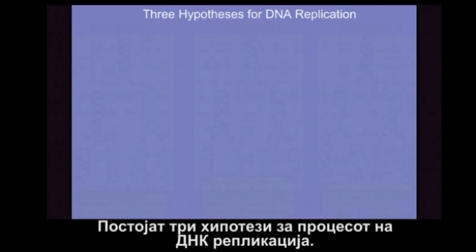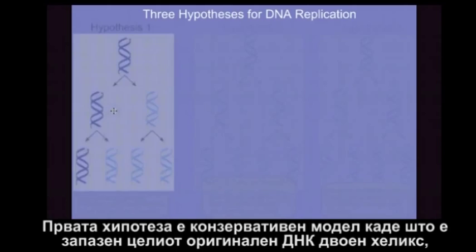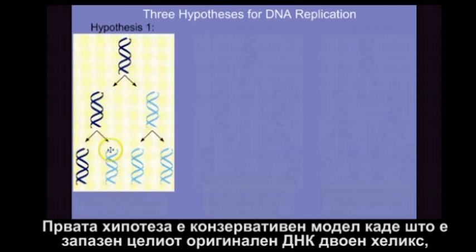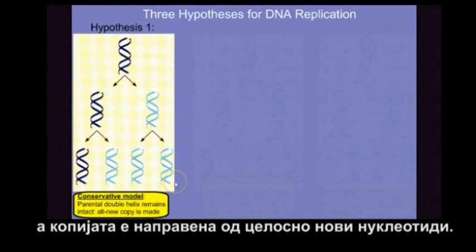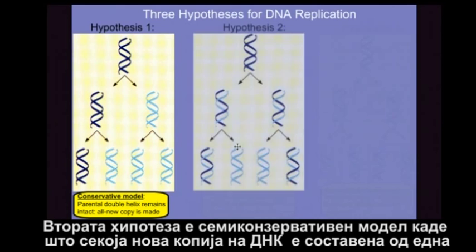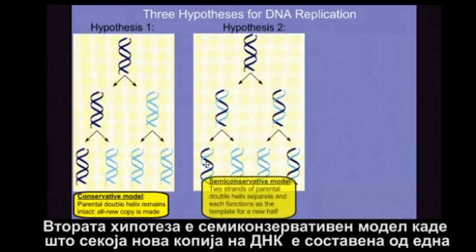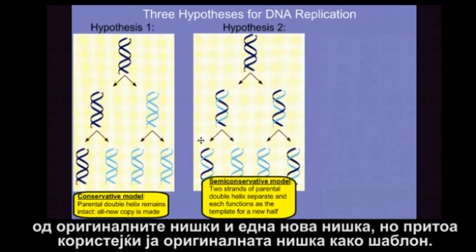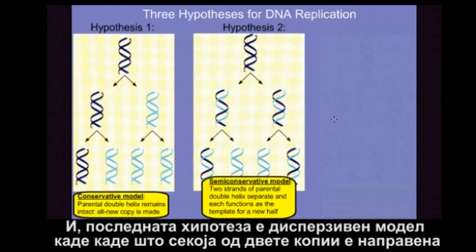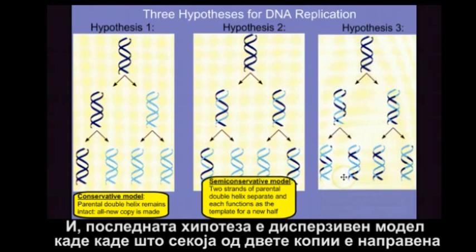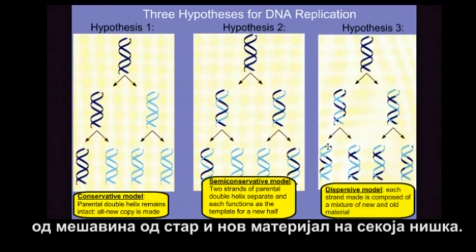There are three different hypotheses for the process of DNA replication. The first hypothesis is a conservative model, where the entire original DNA double helix is conserved and the copy is made of entirely new nucleotides. The second hypothesis is called the semi-conservative model, where each new copy of the DNA is composed of one of the original strands and one new strand built using the original strand as a template. And the final hypothesis is the dispersive model, where each of the two copies are composed of a mixture of old and new material on each strand.